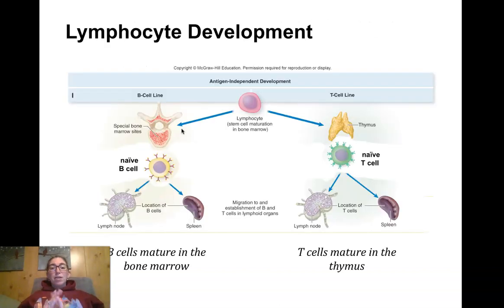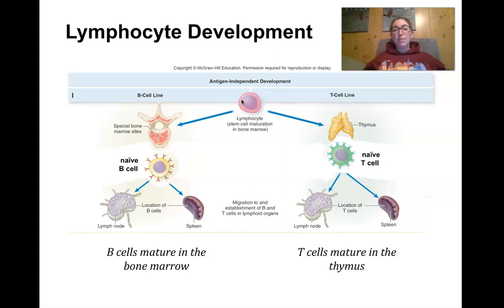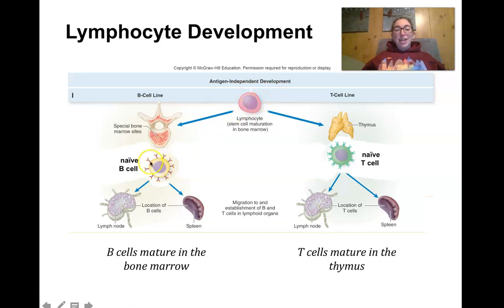Let's start with lymphocyte development. All of your blood cells — red blood cells, white blood cells, neutrophils, macrophages, eosinophils, lymphocytes, B cells, T cells — all develop in the bone marrow from hematopoietic stem cells. The ones that develop into lymphocytes will leave the bone marrow. Some stay in the bone marrow and mature into naive B cells. These naive B cells patrol around and wait for some experience. They live primarily in the lymph nodes and the spleen.